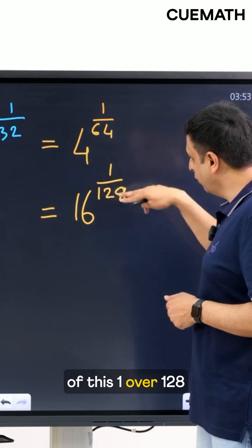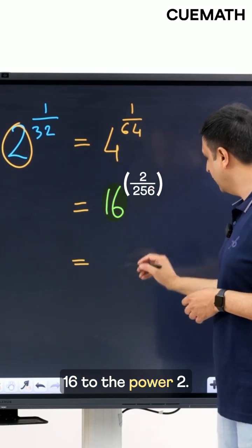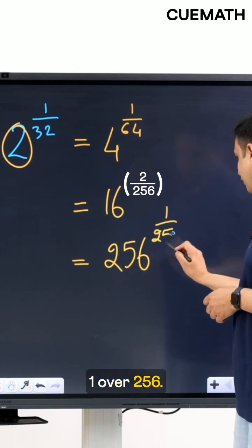Now I'll think of this 1 over 128 as 2 over 256 and this will give me 16 to the power 2 that's 256 to the power 1 over 256.